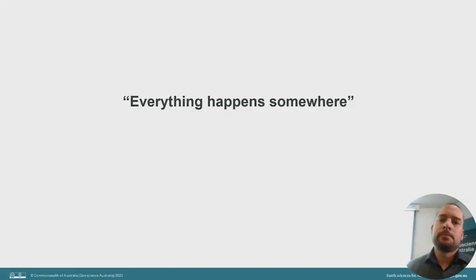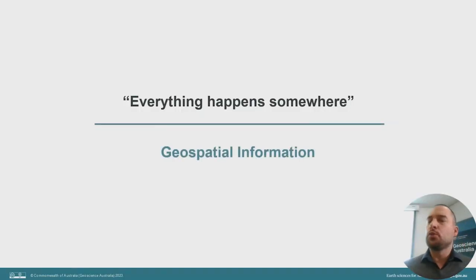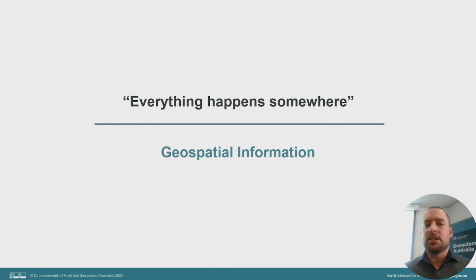Everything happens somewhere. It's a simple enough statement — uncomplicated and obvious — but it also opens the introduction to the integrated geospatial information framework, the overarching strategic document published by the United Nations Committee of Experts on Global Geospatial Information Management, the UNGGIM. At its core, it underpins a central curiosity to understand what is going on where. Geospatial information provides a link between location and action, allowing us to implement measures, plans, rules and protections to manage human, economic and environmental activity and their impacts.